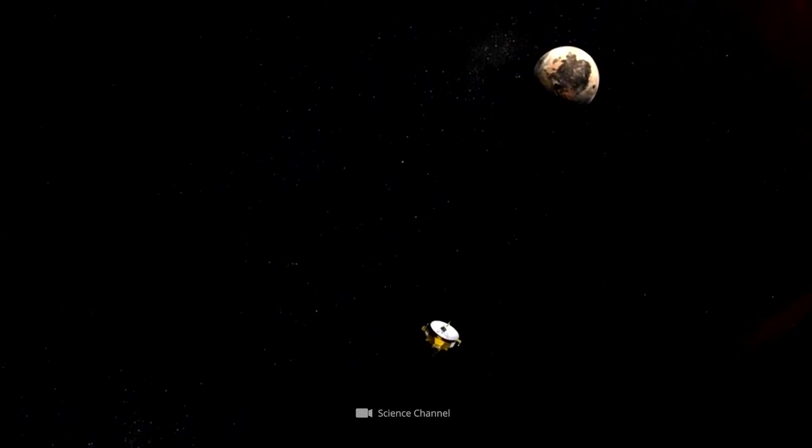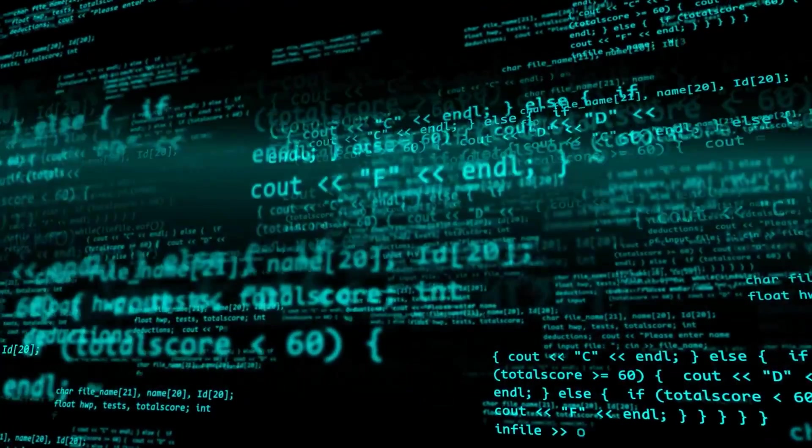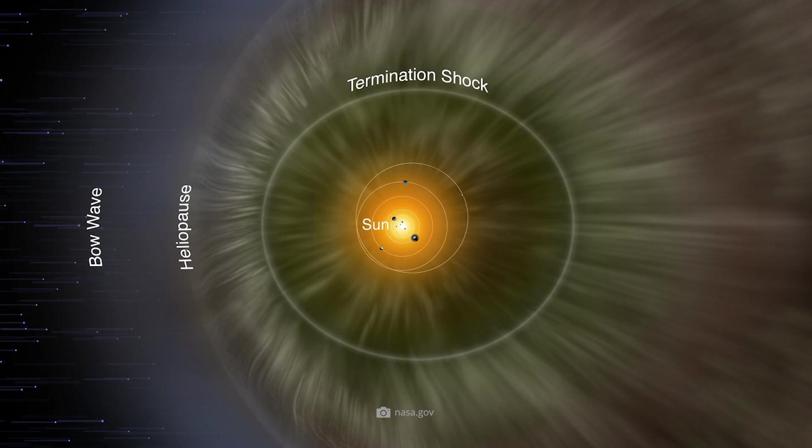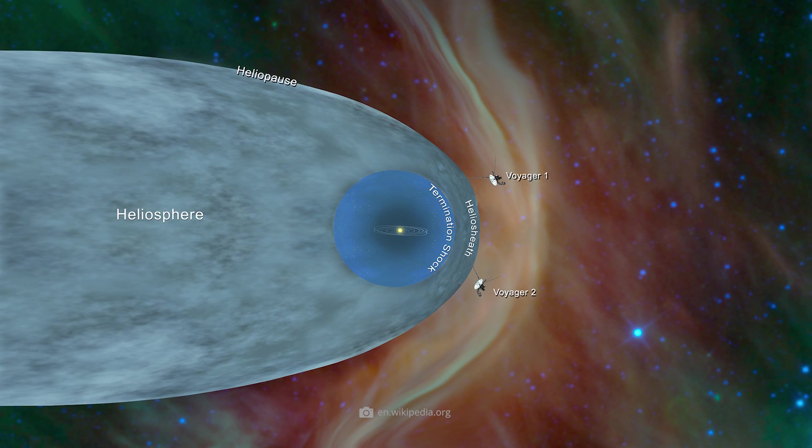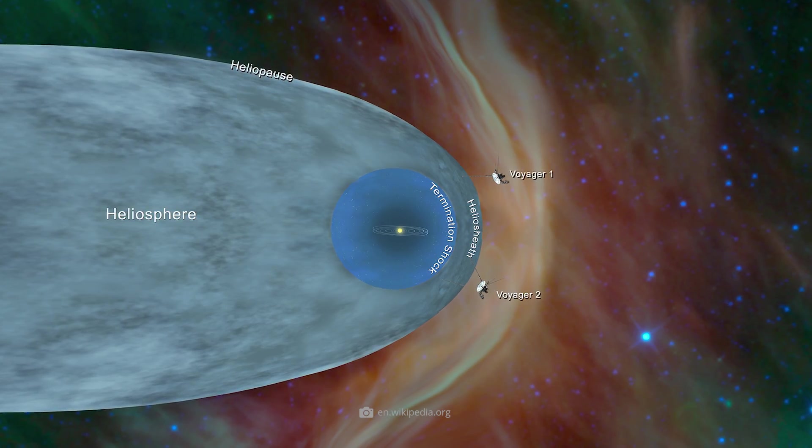Since then, New Horizons has been moving further and further away from our solar system. Data sent by the probe to Earth indicated that there is a mysterious barrier beyond the end of the heliosphere.